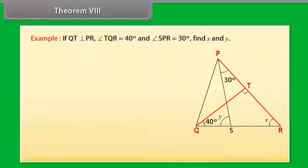If QT is perpendicular to PR, angle TQR equals 40 degrees, and angle SPR equals 30 degrees, find x and y.